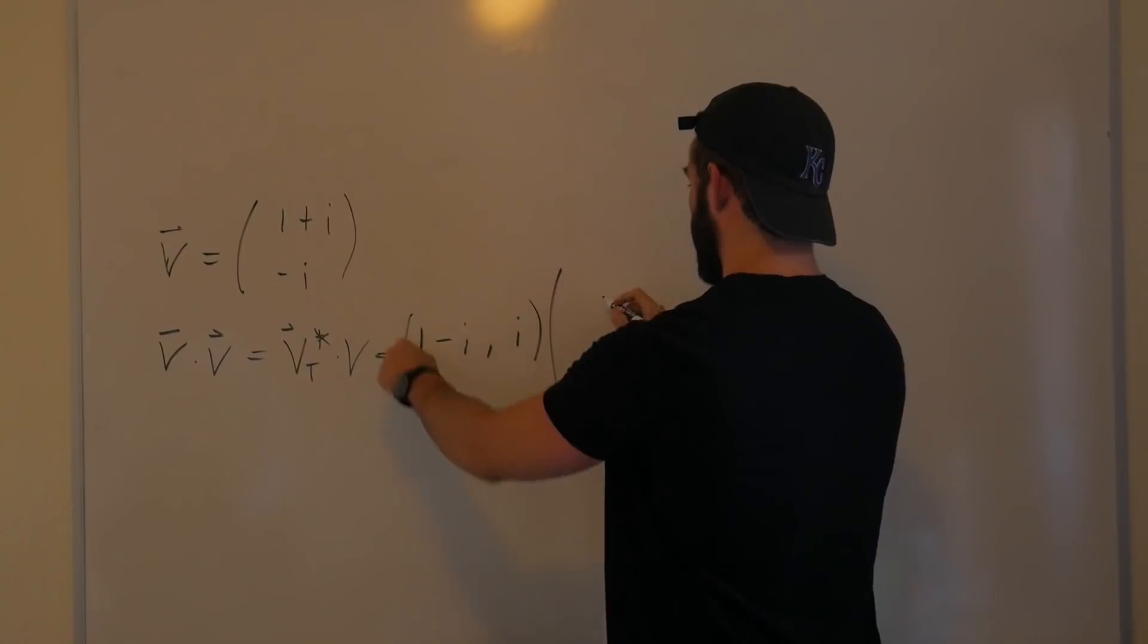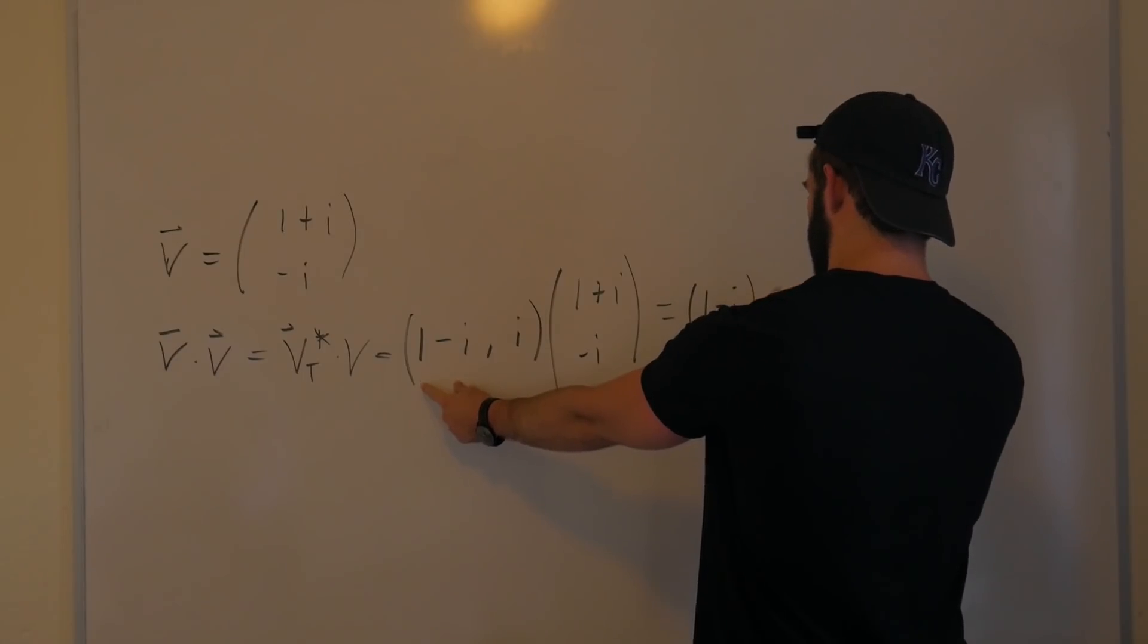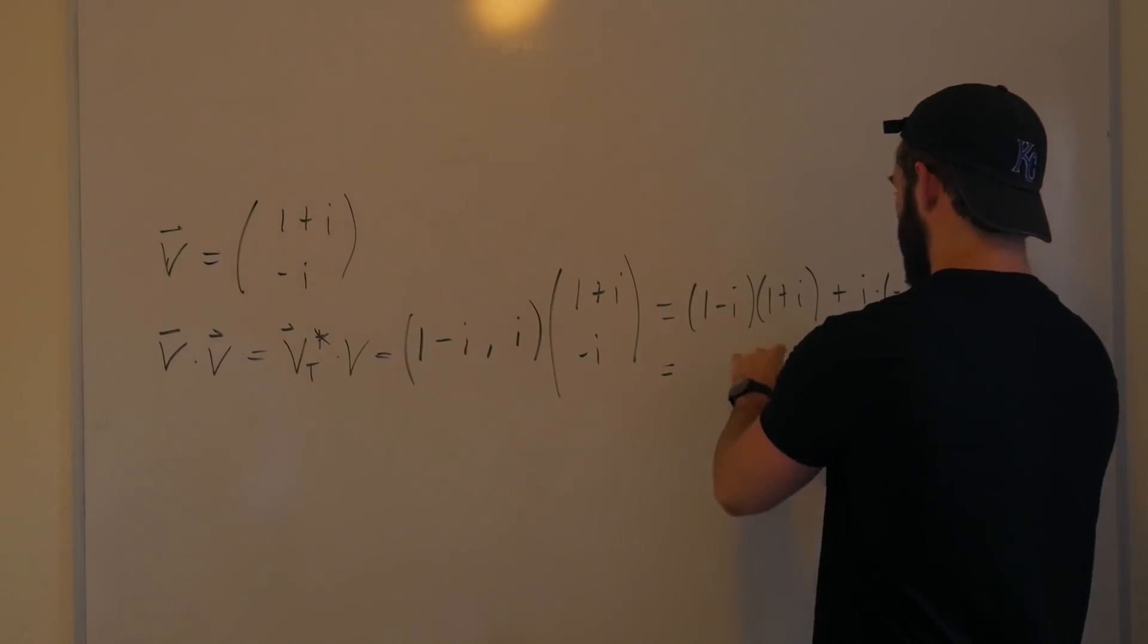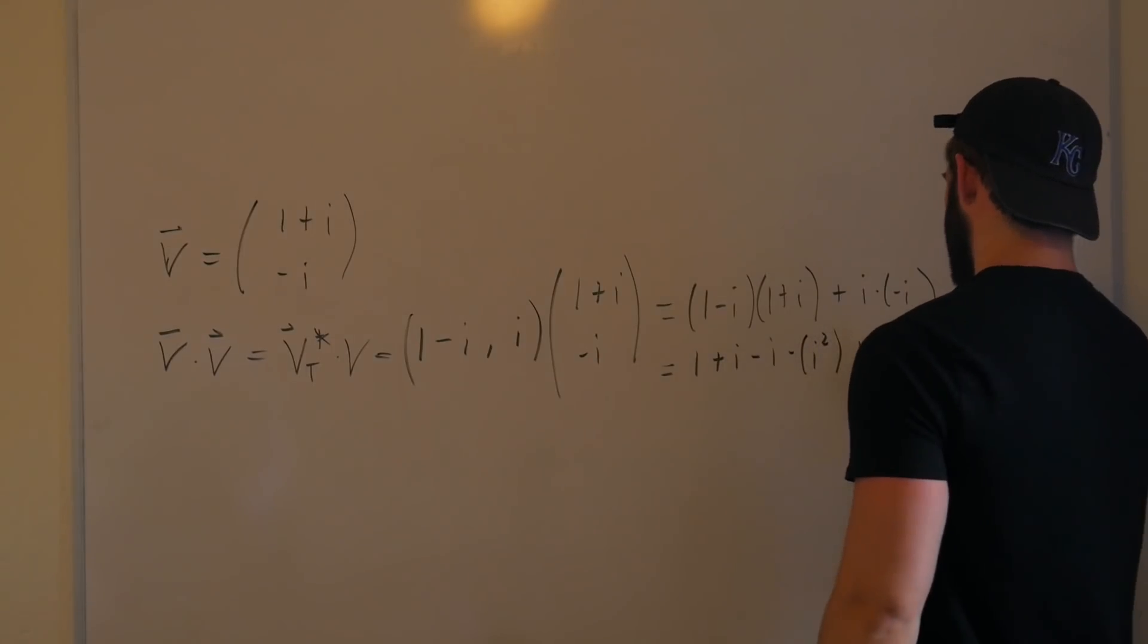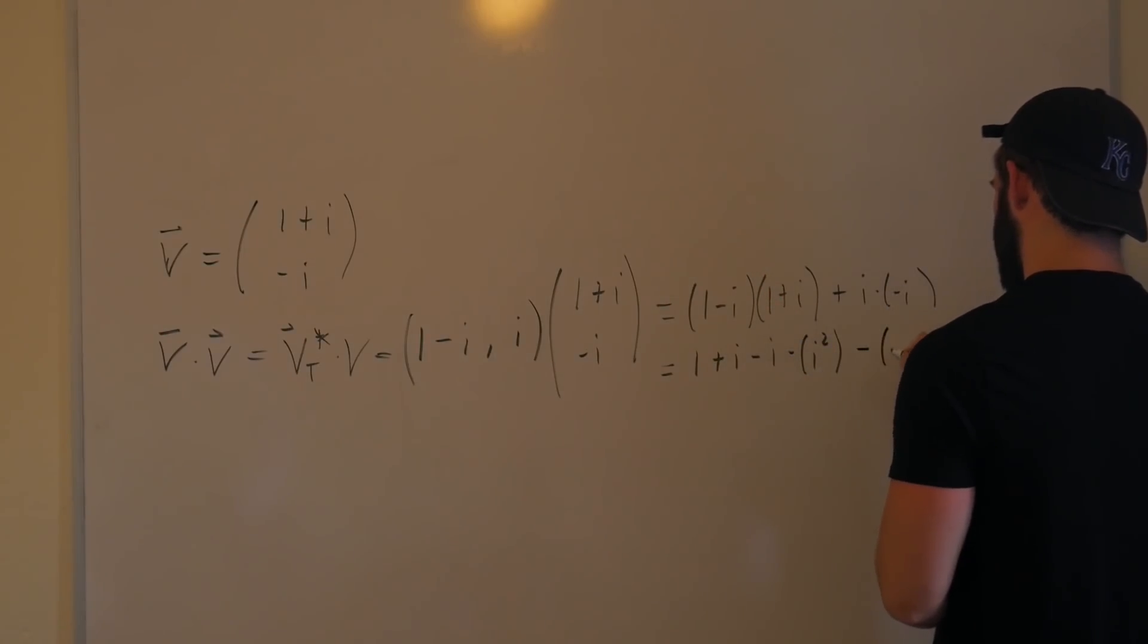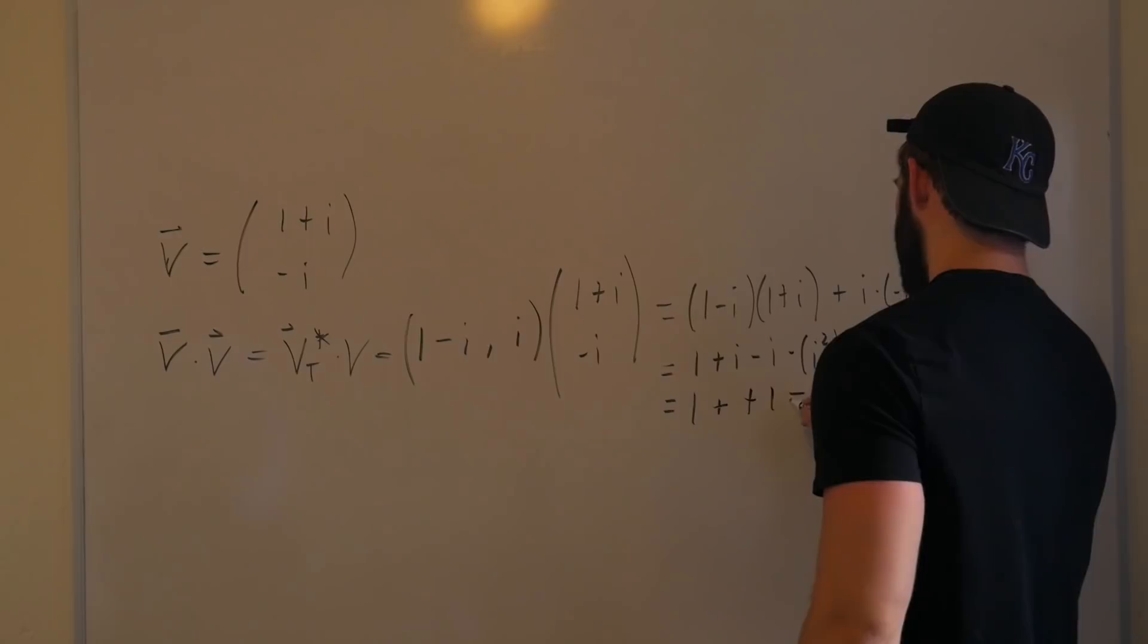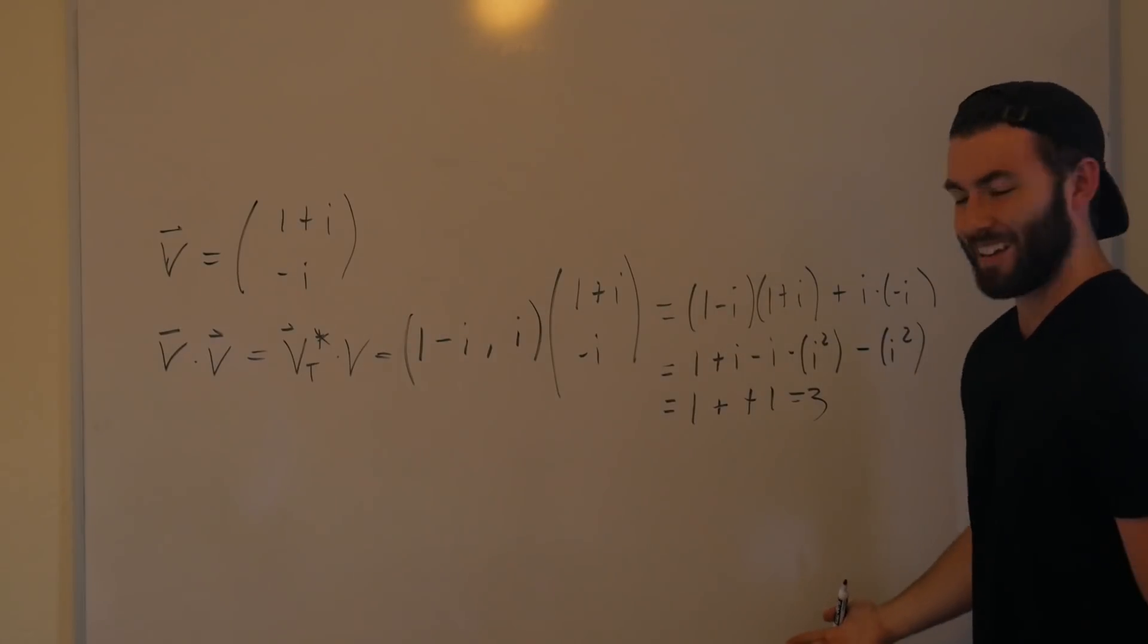That is going to be equal to v transpose complex conjugated dot v normal, which is equal to, so the only term that is complex gets the sign flip, so it's going to be 1-i, comma positive i, and then a column vector being the same thing, 1+i, -i, which is equal to 1-i times 1+i plus i times -i. So we fold this out. This is going to be 1+i-i-i squared minus i squared, which is equal to one. Well, i squared is -1. -1 times -1 is going to be +1+1 equals three. And it's pretty easy to see that if we took the magnitude of this, this would also be positive because it's three.